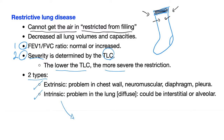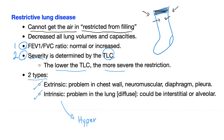Intrinsic lung disease includes hypersensitivity pneumonitis. Restrictive lung diseases are divided into extrinsic and intrinsic. Extrinsic means it's not the lung's fault — it could be the thoracic wall, neuromuscular, diaphragm, pleura, or even the abdomen.